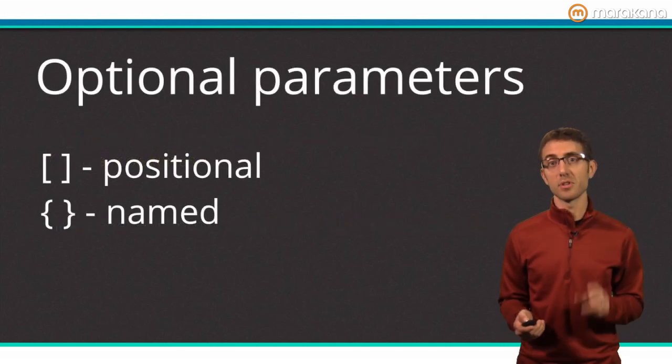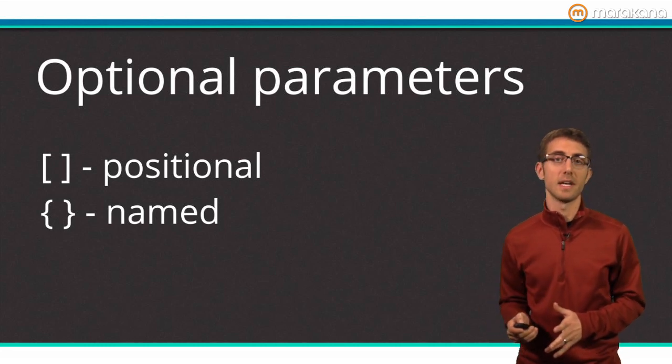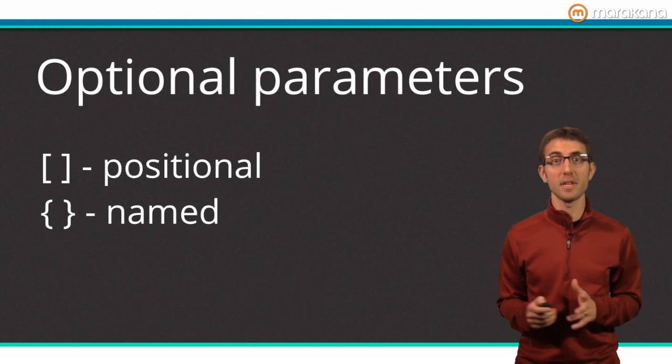To briefly recap, there are two ways to define optional parameters. Square brackets for optional positional parameters, and curly braces for optional name parameters.